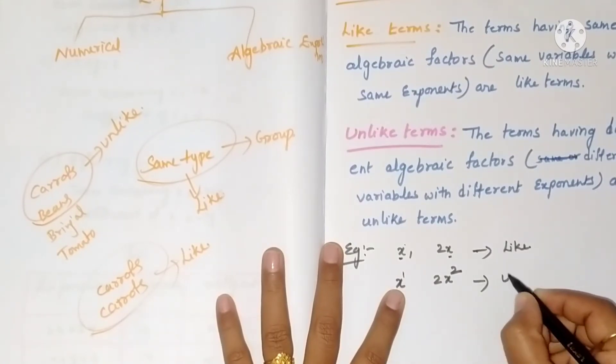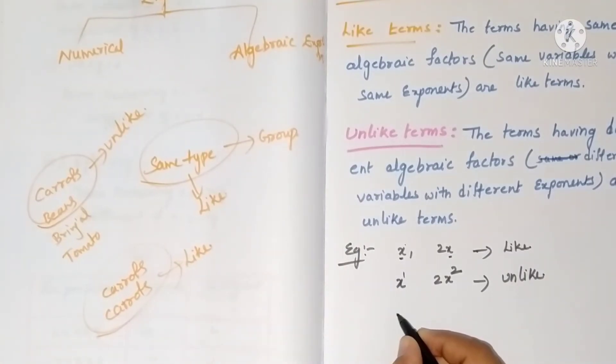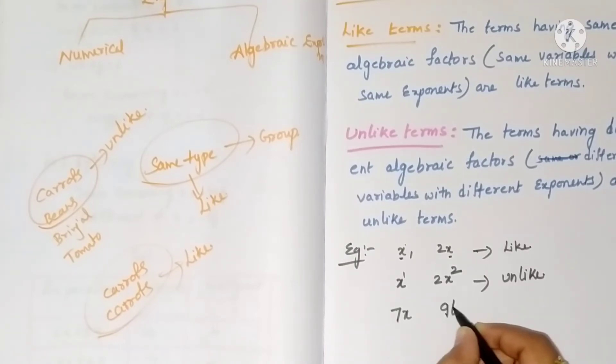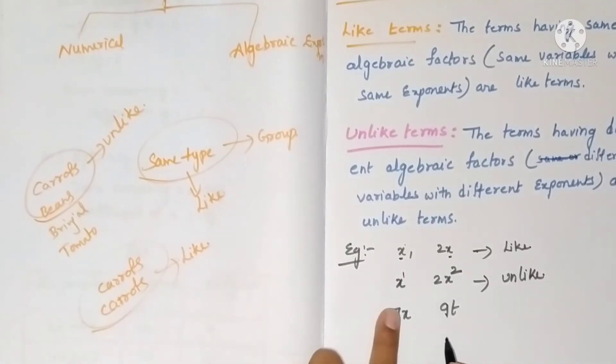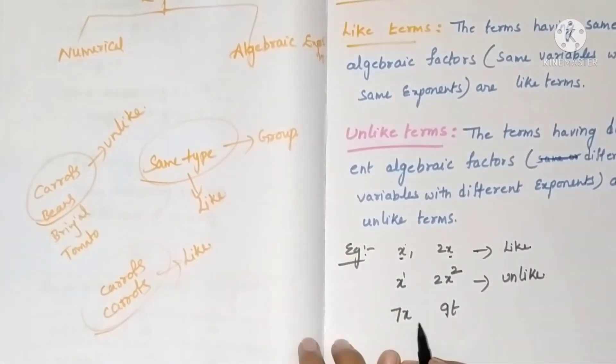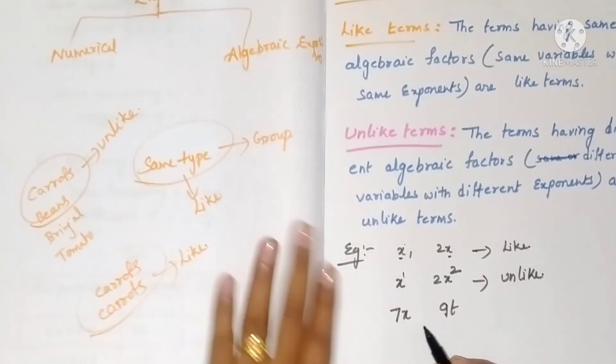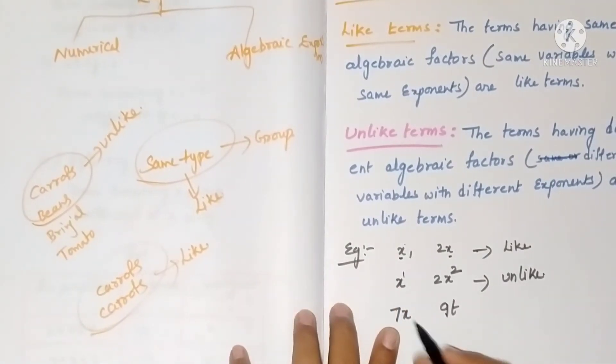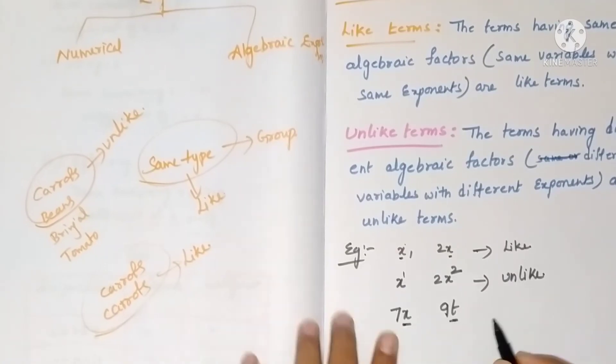They both are not the same, so they are unlike terms. Here I am writing 7x and 90. Number doesn't matter, just ignore it and see the letters. x is there and nothing is there - different letters, so unlike terms.